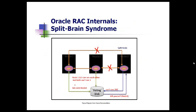Now I'm going to explain the split-brain syndrome — basically what split-brain is and what happens when some of the nodes cannot see another node. This picture basically explains the split-brain problem: what happens when a node no longer sends the heartbeat to the other members of the cluster.